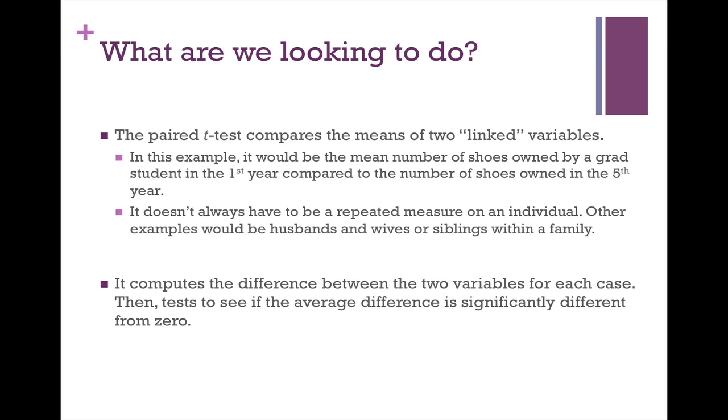So what is a paired t-test going to do for us? The paired t-test is the test you use when you're trying to compare the means of two related or linked variables. In this case, we have the ultimate linked variable: the mean number of shoes owned by graduate students in the first year, each individual's number of shoes, compared to that individual's number of shoes owned in the fifth year. This is a repeated measure, but it doesn't always have to be. Anytime that two variables can be related in any way, you can use a paired t-test.